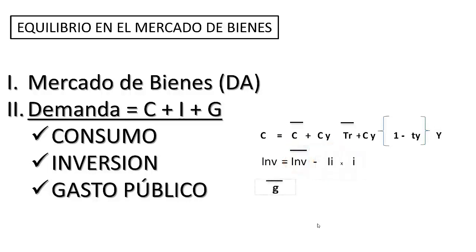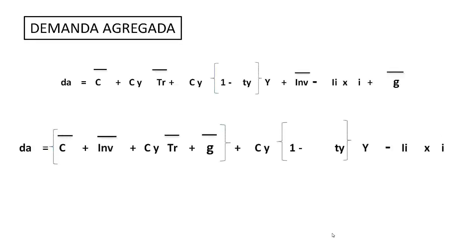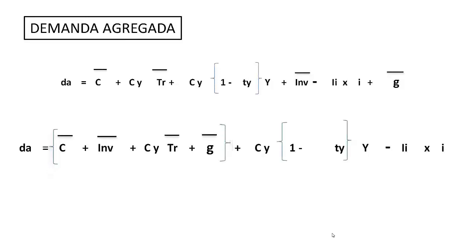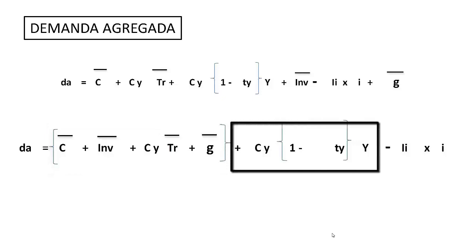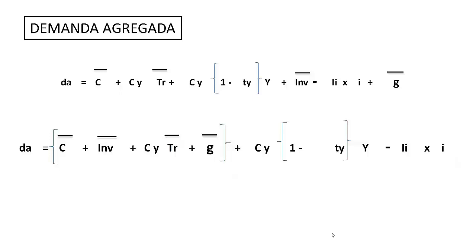El gasto público lo consideramos en su totalidad autónomo. De la fórmula del consumo más la inversión más el gasto público, voy a agrupar los conceptos autónomos que no dependen de nada, ni del tipo de interés ni de la renta.